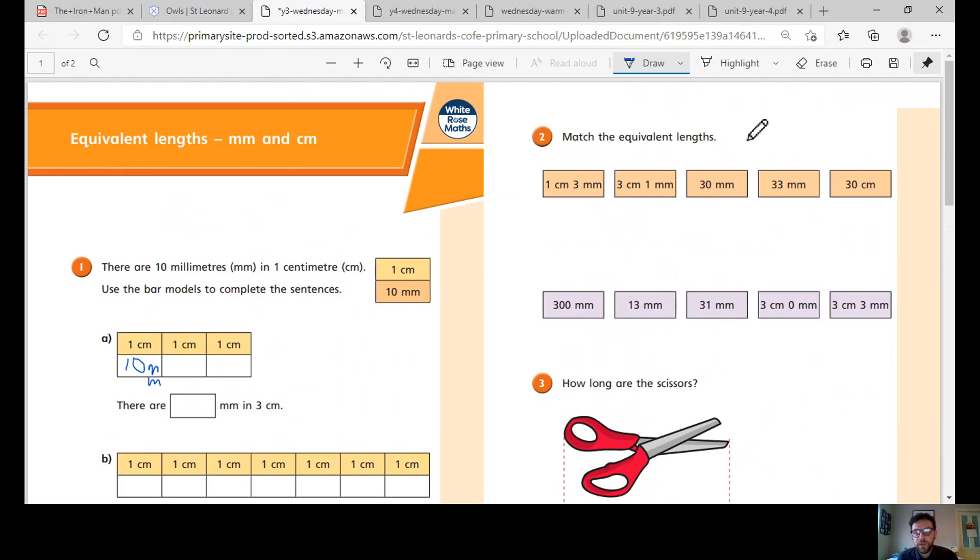Question two, match equivalent metres. I would convert them, so one centimetre and three millimetres. Now we know there are 10 millimetres in one centimetre, so we add that to our three.